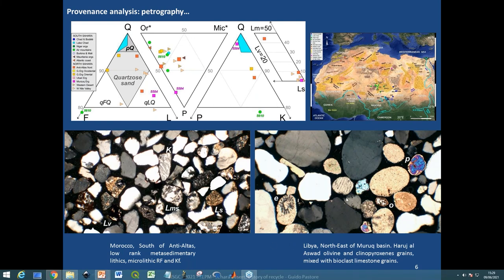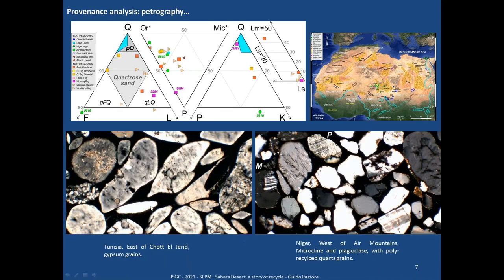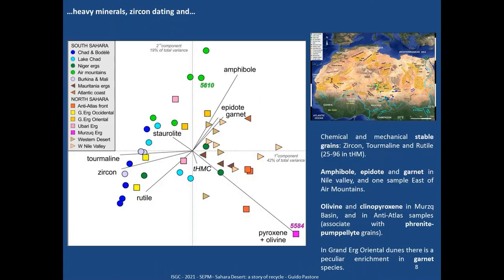In the Murzuk basin we have bioclasts associated with olivine and pyroxene. In other cases we have gypsum grains, and west of the Aïr mountains we have peculiar samples with K-feldspar microcline more abundant than plagioclase. But as I said, the majority of our samples are really homogeneous in a highly quartz-rich composition.